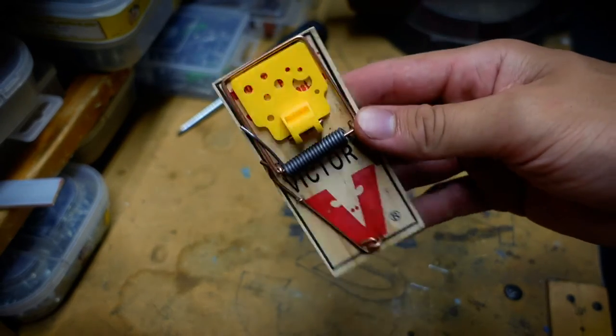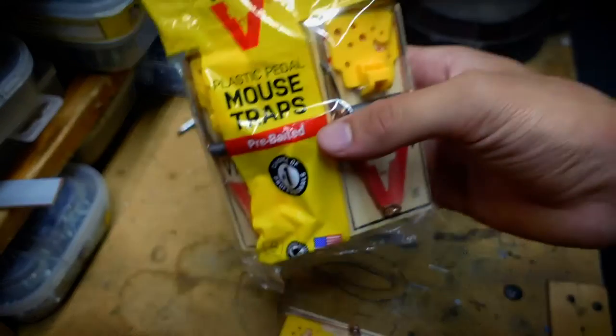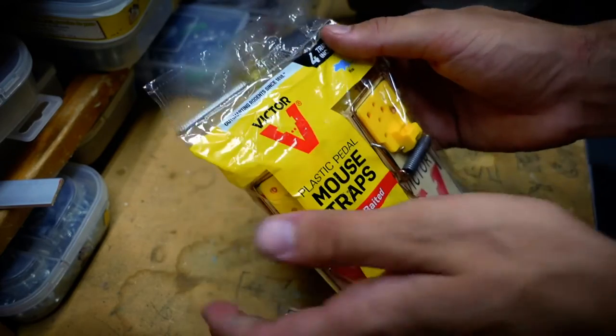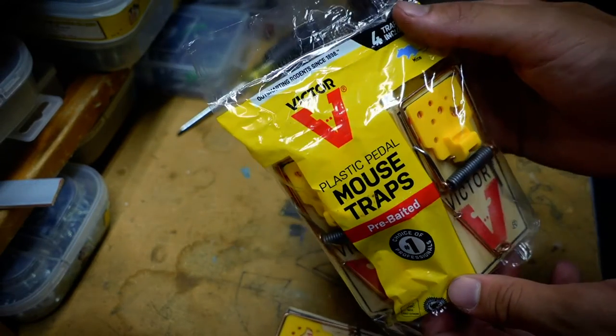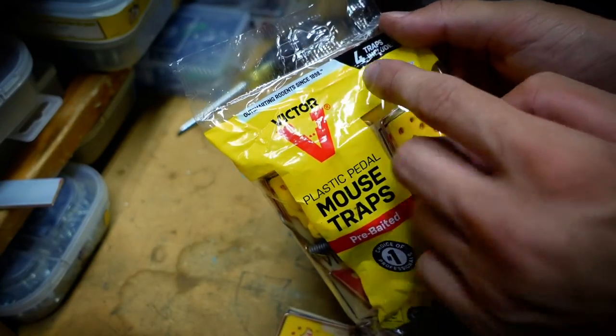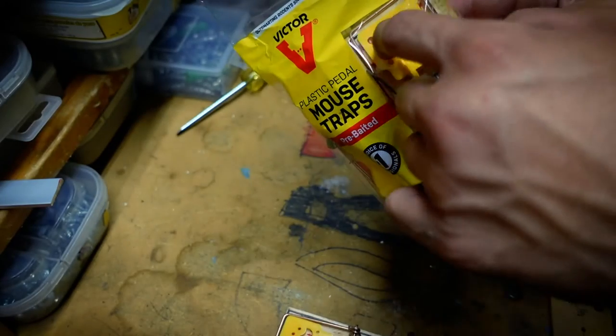Here we go, we got some rat traps. These are plastic pedal mousetraps. They come in a four pack, Victor brand. I like this brand a lot, I've had some success with them in the past. Victor's been outsmarting rodents since 1898. Four traps included, they're pre-baited.